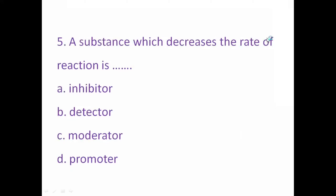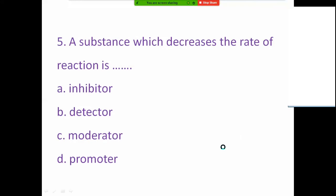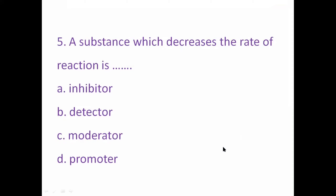A substance which decreases the rate of reaction is: A) Inhibitor, B) Detector, C) Moderator, D) Promoter. The right answer is A — inhibitor. A substance which decreases the rate of reaction is called an inhibitor.